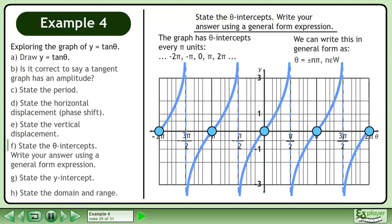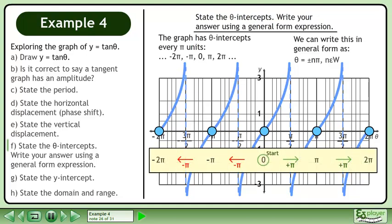We can write this in general form as theta equals positive or negative n pi, where n belongs to the set of whole numbers. This means that if we start at 0 radians, we can add or subtract pi to get the adjacent theta intercept.